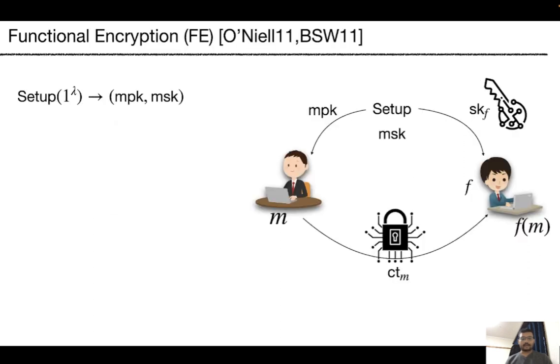In functional encryption, the setup authority generates a master public key MPK and a master secret key MSK. Using MSK, the authority computes the secret key SKF corresponding to any function F and distributes the secret key to the user of the system.